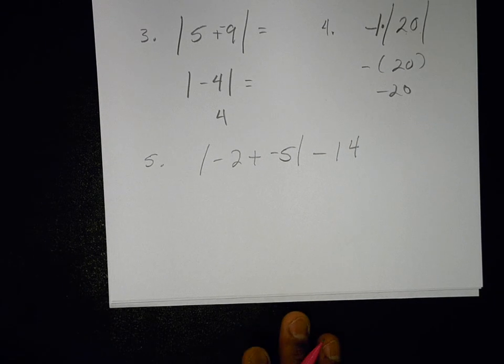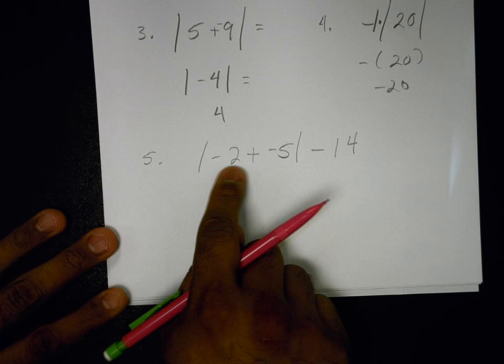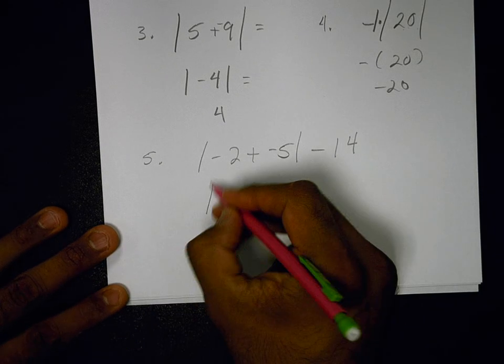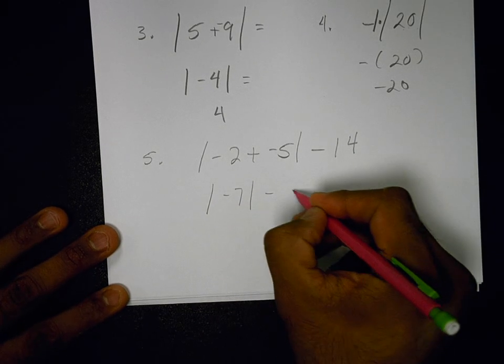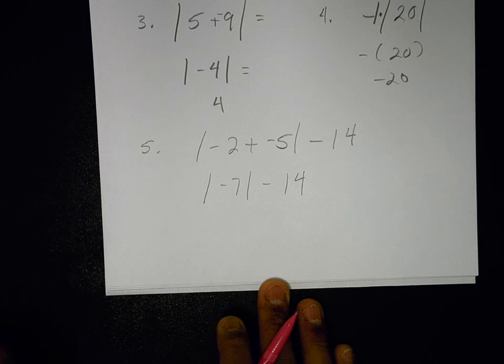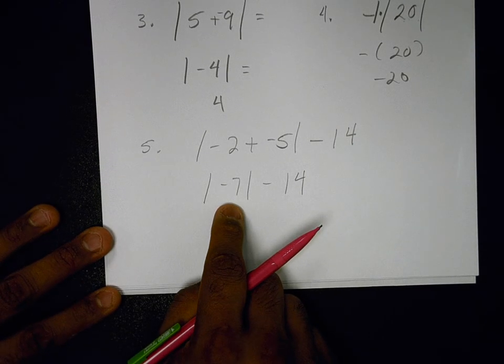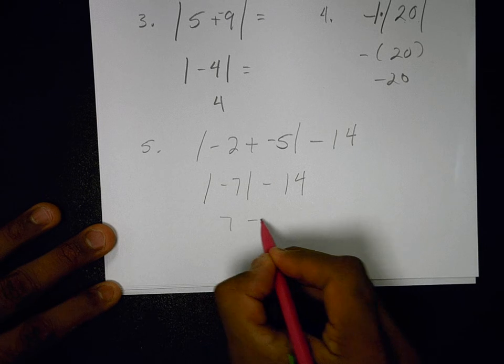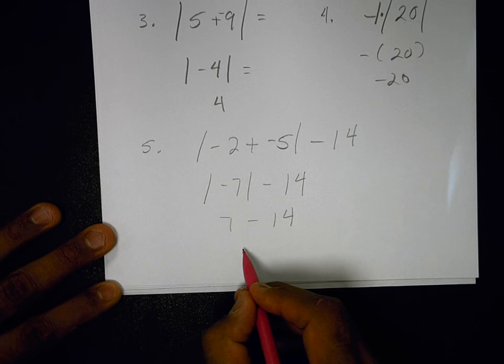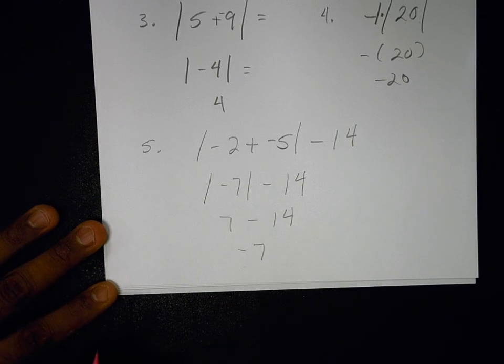Same thing here. Nothing turns positive. I'm going to do inside the absolute values first. So I get negative 7 minus 14. Now there's nothing else to simplify, so I'm going to ask myself, how far is negative 7 from 0? And the answer is 7 spaces. And then minus 14. And the answer is negative 7.